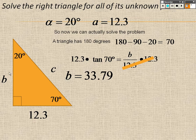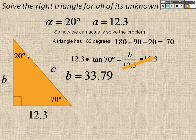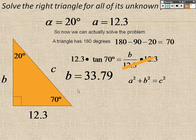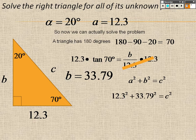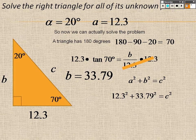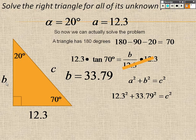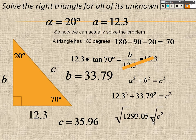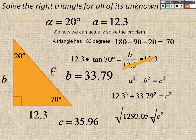So I multiply by 12.3 on both sides to get 33.79 is b. Now I can either do the Pythagorean theorem to find c, or I can just do another one to find the answer. I'm just going to do Pythagorean theorem. This is 12.3, so it's a squared, which is 12.3 squared, plus b squared, which is 33.79 squared equals c squared. So it's 1293.05 equals c squared, so I square root both sides to get roughly 35.96.